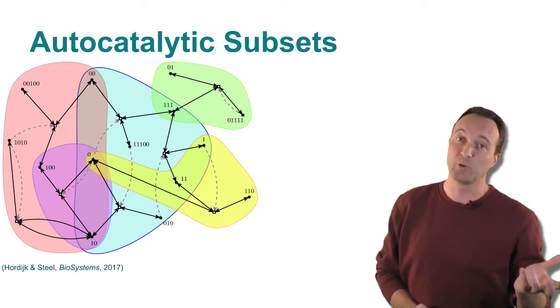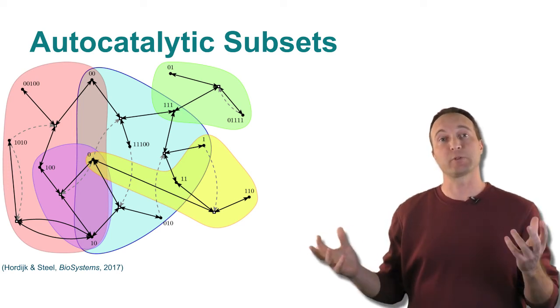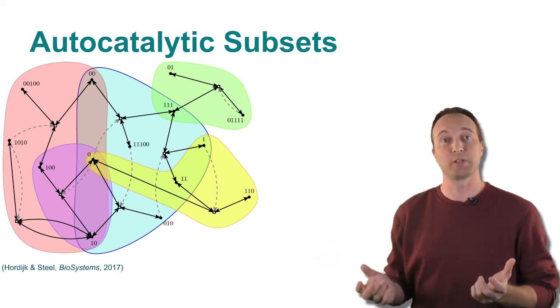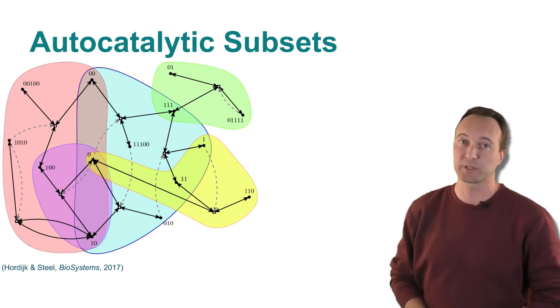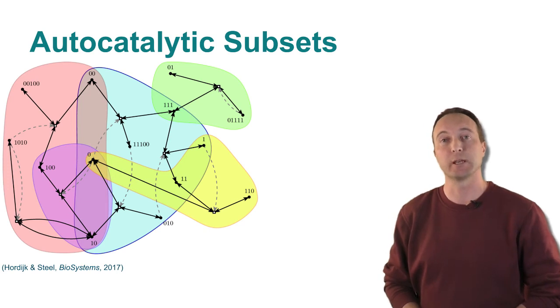This would form two different types of protocells, which might compete with each other for food resources, in this case the monomers and dimers, and perhaps even give rise to some simple evolutionary dynamics.